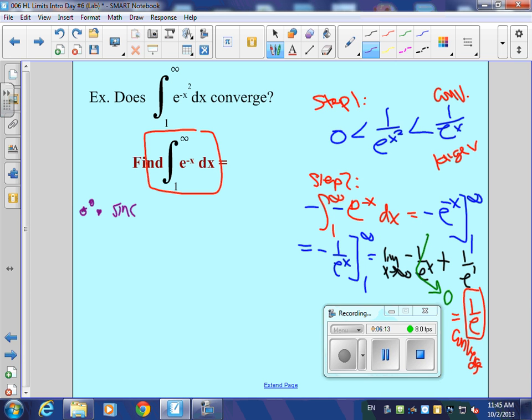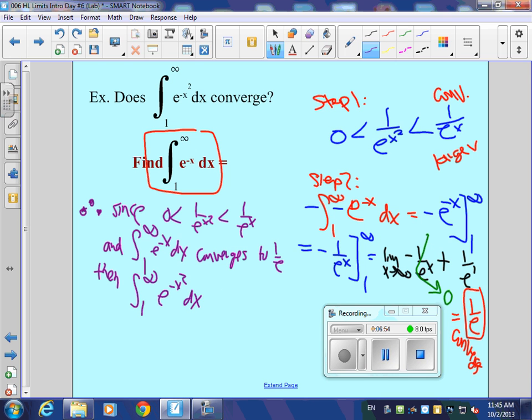You write your two since things. What's one thing in the since statement? The in-betweenness. Zero, 1 over e to the x squared, 1 over e to the x. Got to put that. And the integral from 1 to infinity of e to the negative x dx converges. You can even say to 1 over e, if you want. Then, if that larger one converges, then the integral from 1 to infinity, e to the negative x squared, dx, converges by what? Comparison test.